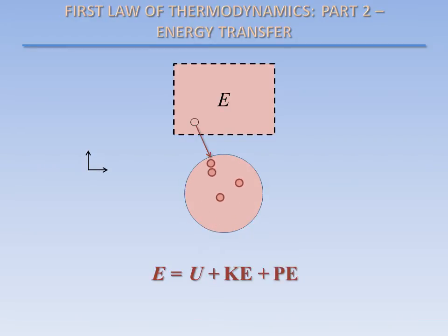The total amount of energy contained in the system changes when energy is gained or lost by crossing the system boundary. The total energy of the system increases when energy enters the system, and the total energy decreases when energy leaves the system.